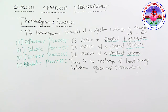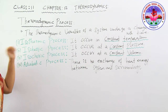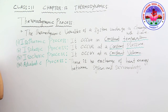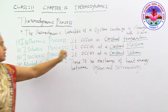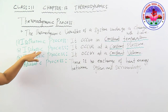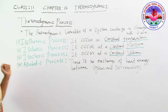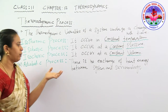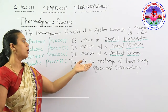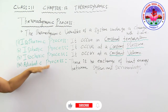The isothermal process is a thermodynamic process occurring only at constant temperature. The isobaric process occurs at constant pressure. The isochoric process occurs at constant volume. The adiabatic process is carried out only when there is no exchange of heat between the system and the surroundings. These are the essential conditions for each process.